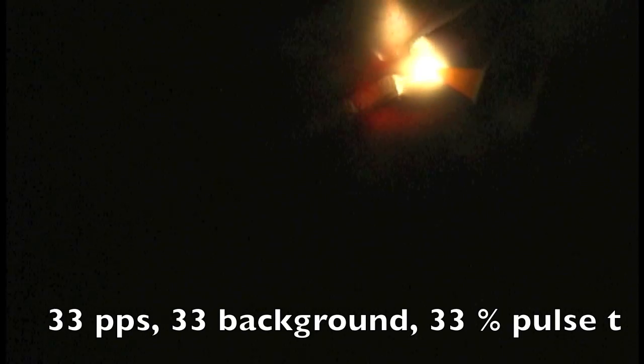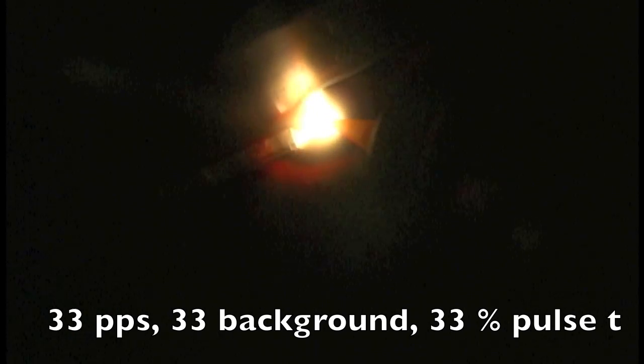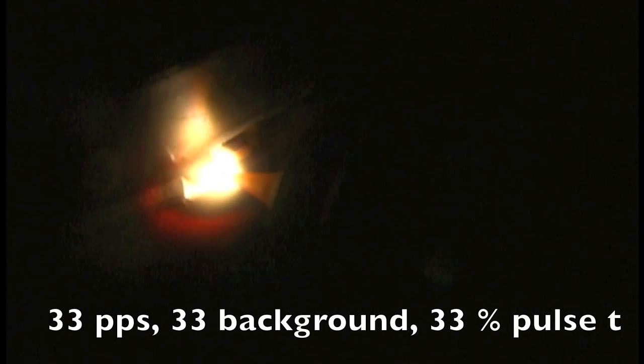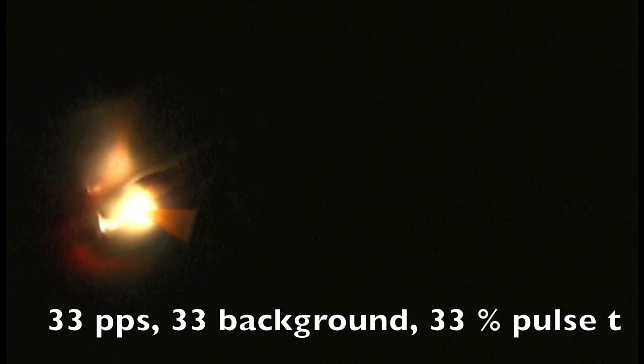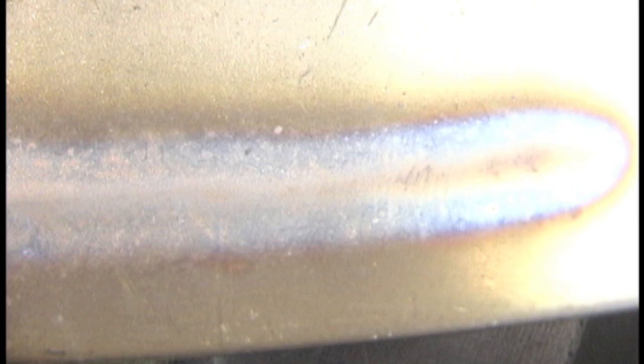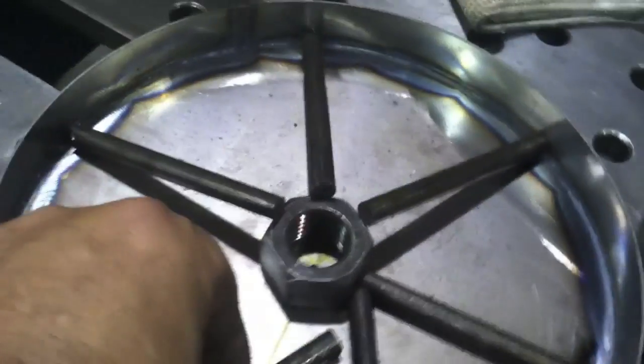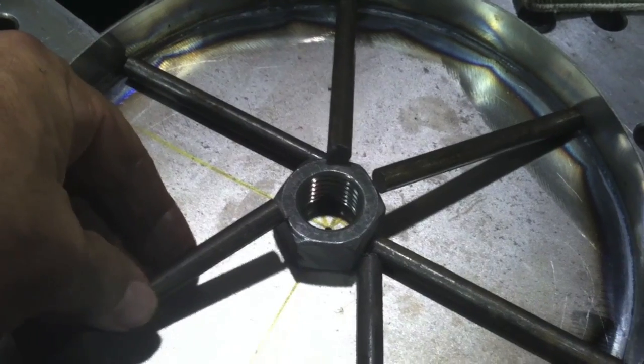Here I've got it set at 33 pulses a second, 33% background and 33% pulse on time. You can't even really notice it. The camera doesn't even pick up the flicker hardly, but it does make a difference and it'll keep you from melting through. See, I didn't even nip through on the backside of the 40 thousandths with pulsing like that. You could also do it without pulse. Pulsing just makes it a little bit easier.